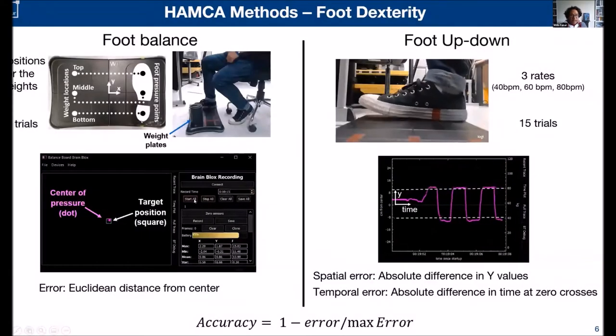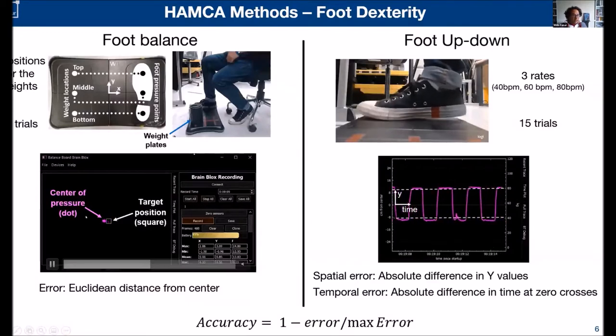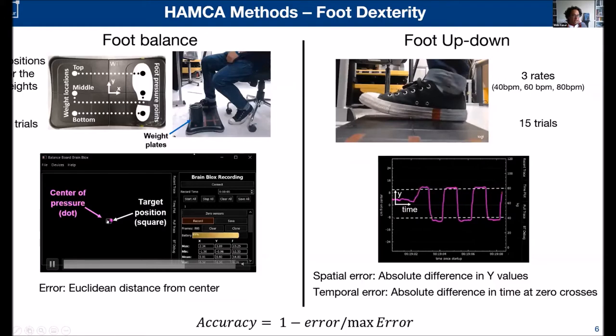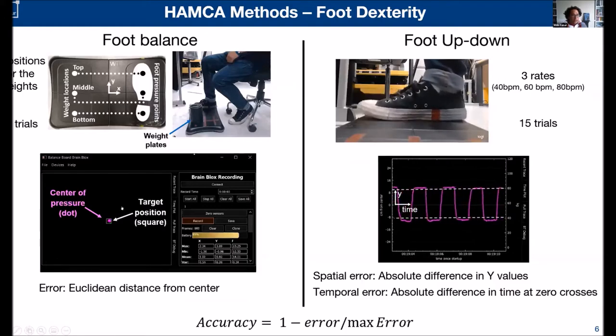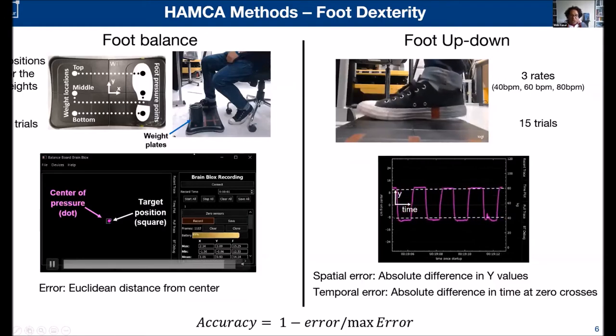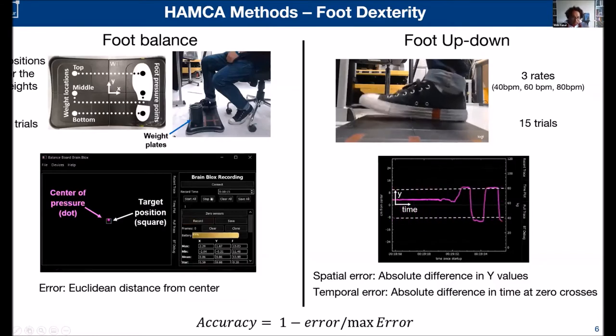The tasks look very simple. We have a foot balance task. That's a wee balance board where we ask them to control basically the central location of the forces on the foot. This gives us a measure of the accuracy and motor noise that they have in their foot system. Why? Because this is, of course, the interface that we're reading out to control the thumb.